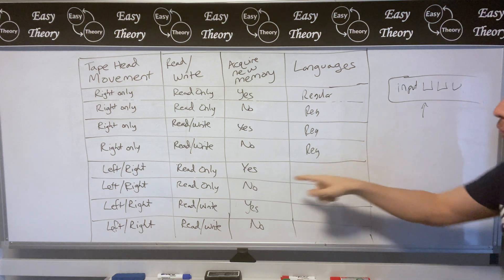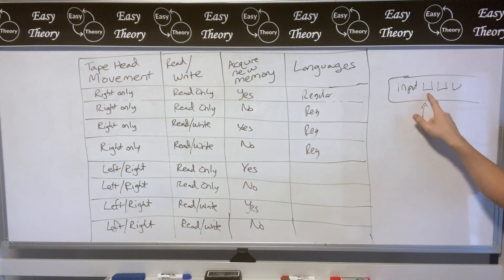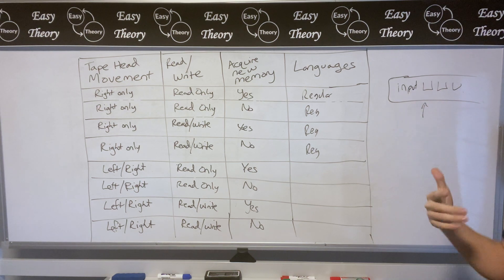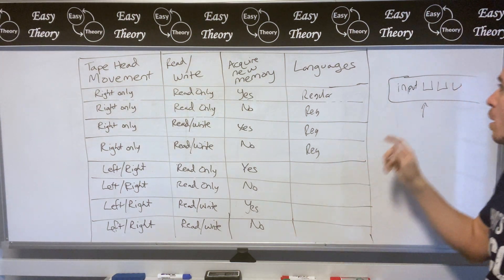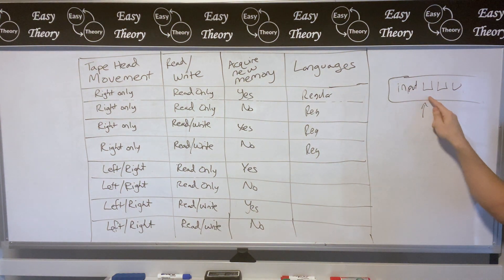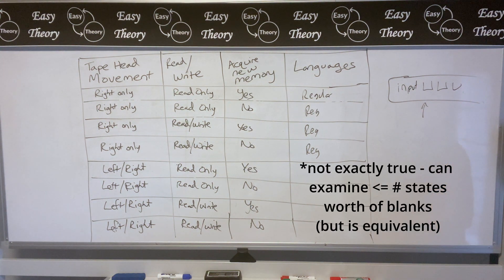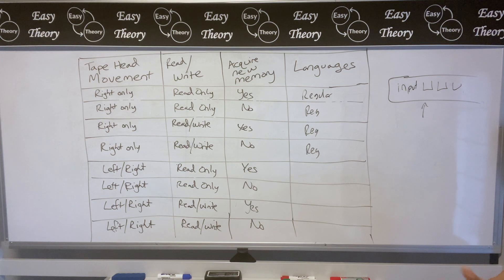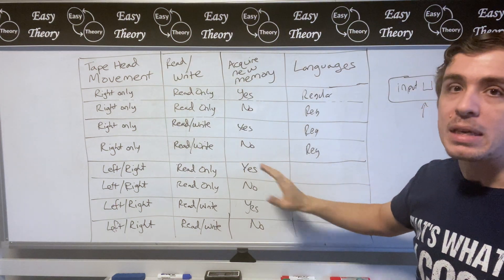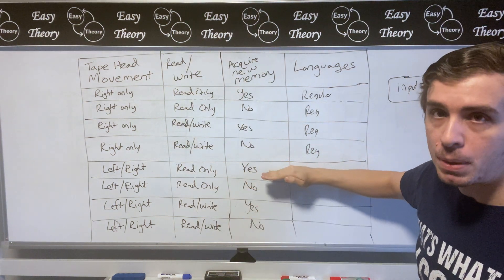But the thing is if we can only read, once we get over to here then either we can move left immediately in which case we're in the same problem scheme as we are before, or we move right in which case we're going to do that forever anyway. So you can actually show that this acquiring new memory is completely useless to this particular model.